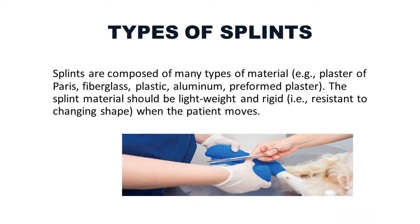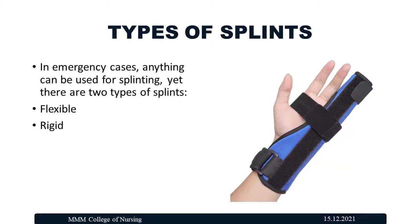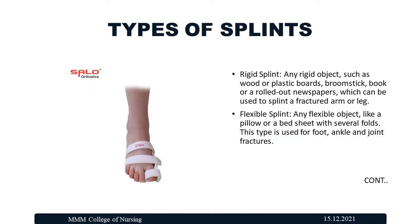There are many types of materials used for splints: plaster of Paris, fiberglass, plastic, aluminium, and preformed plaster. Splint materials should be light and rigid. There are two types: flexible and rigid.